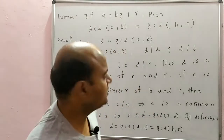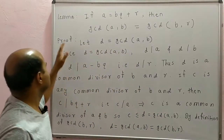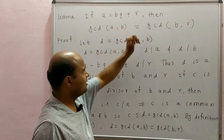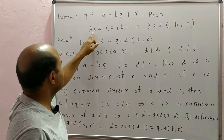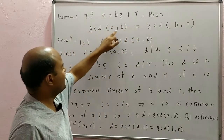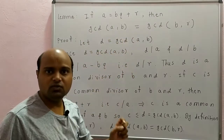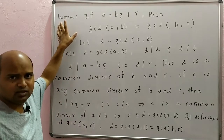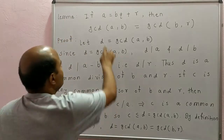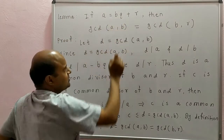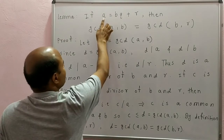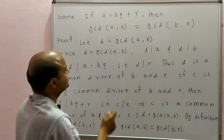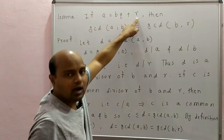Before that, we will see this lemma. If A is equal to BQ plus R, then GCD of A and B is equal to GCD of B and R. What this lemma is saying: if we have A equal to BQ plus R, then the GCD of A and B is the same as the GCD of B and R.